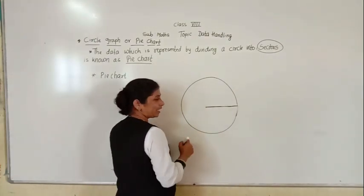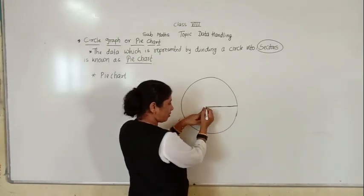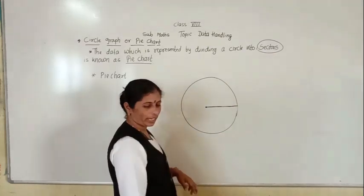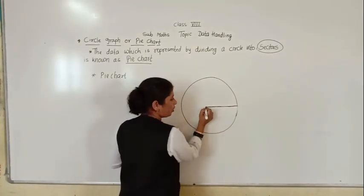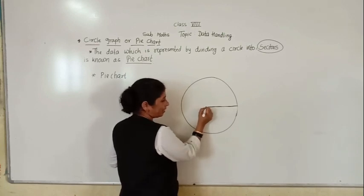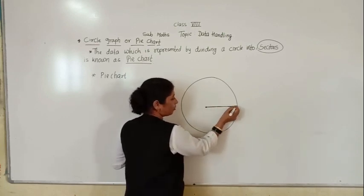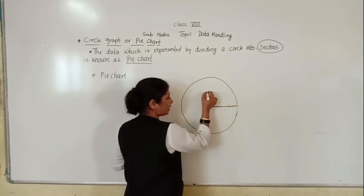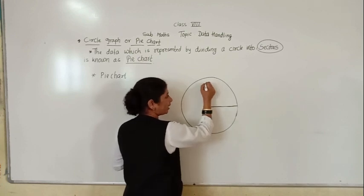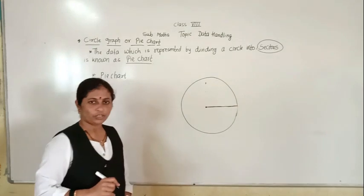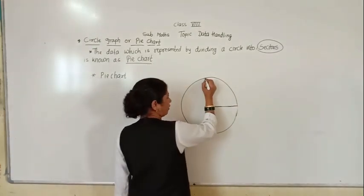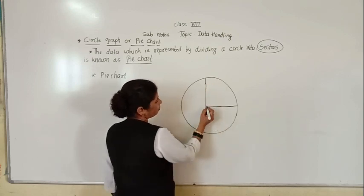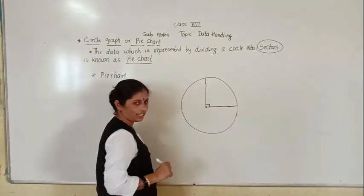If we want to draw a 90-degree angle, we keep the protractor at the center point of the circle, aligning the middle point of the protractor with the center. Then count from 0: 10, 20, 30, 40, 50, 60, 70, 80, and 90. Mark the 90-degree point on the circle, then join that point to the center to get the 90-degree sector.